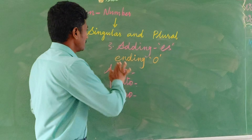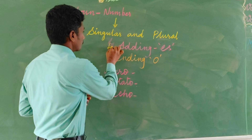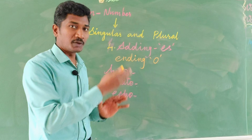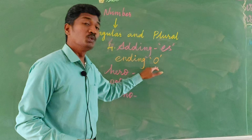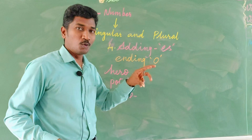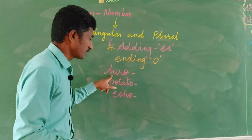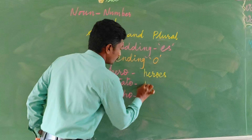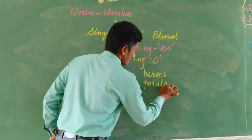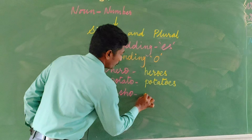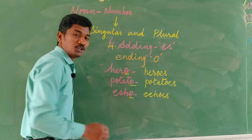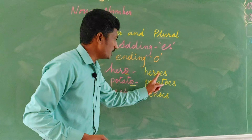Let us move on to rule number four: adding 'es'. If the singular noun ends in 'o', we add 'es'. For example, hero → heroes, potato → potatoes, tomato → tomatoes, and echo → echoes. So ending in 'o', we add just 'es' to make plural.